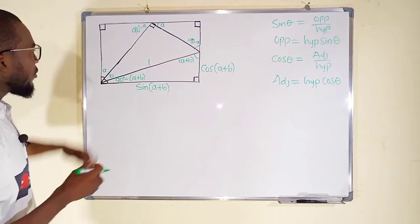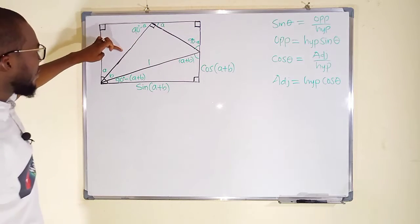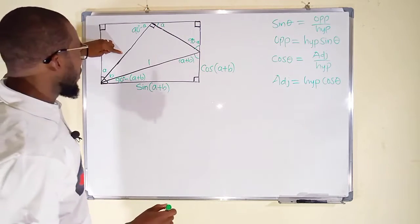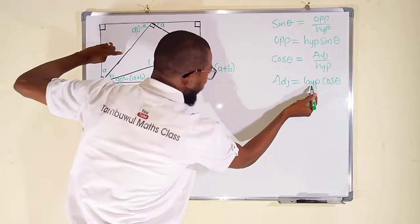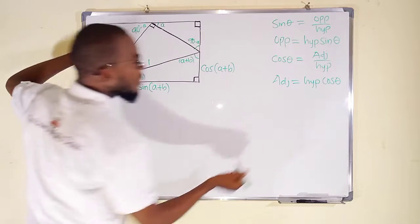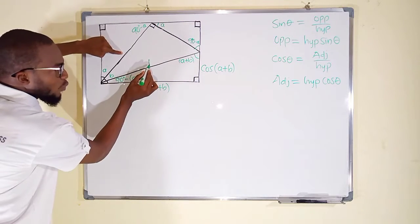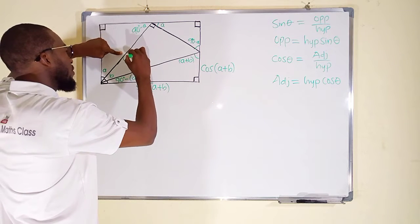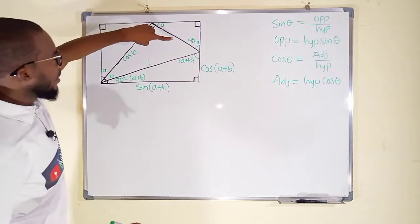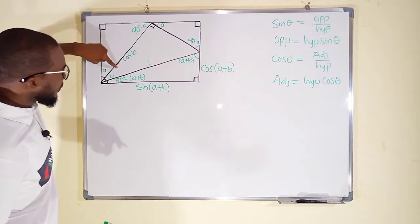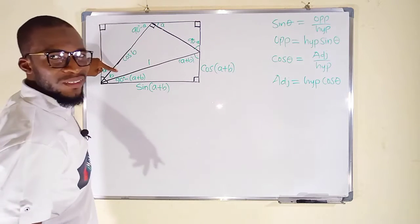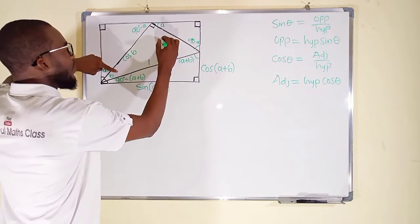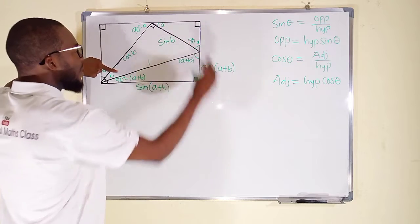Now let us find these side lengths. This side is adjacent to angle B; adjacent equals hypotenuse multiplied by cosine of that angle, and with hypotenuse equal to one this gives us cos B. This side is opposite to angle B; opposite equals hypotenuse multiplied by sine of that angle, so with hypotenuse one we get sine B.